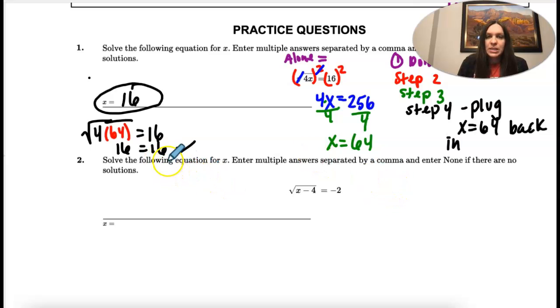Okay, number two, same thing. We're solving for x. So step one is isolate the radical. And for this one, this is already isolated.